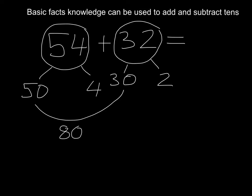Now we need to add our ones, so that's our 4 and our 2. 4 plus 2 equals 6. Now I need to add the tens and the ones together. 80 plus 6, that will give me 86. That's the strategy we're going to be using today.